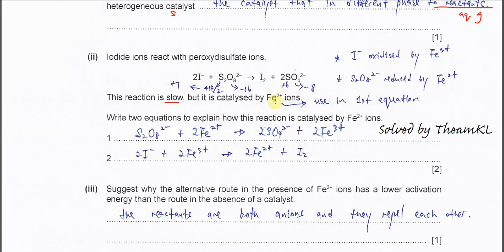From the overall equations given, you must know which species undergoes oxidation and which undergoes reduction. From this equation, we know that iodide is oxidized to iodine, and this iodide must be oxidized by iron(III), because iron(III) needs to be reduced.